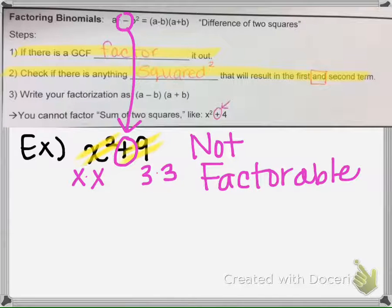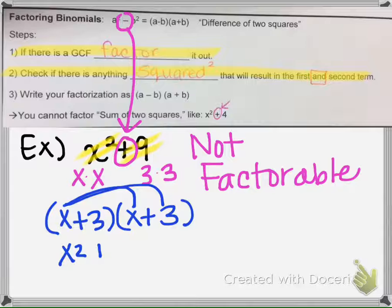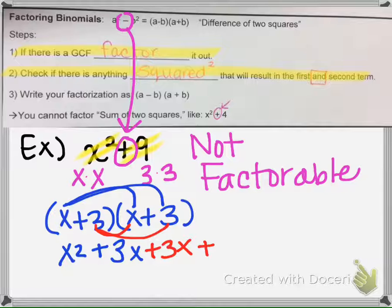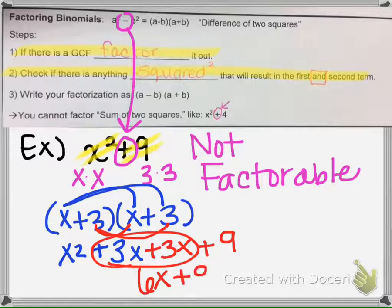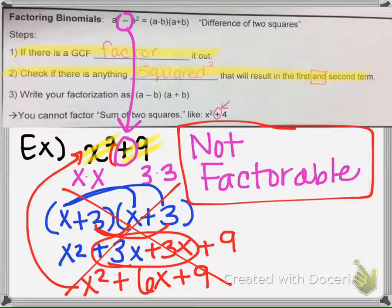A common mistake I see with students is they put x plus 3 times x plus 3, which is wrong. Let's see why. If we multiply this out, we get x squared plus 3x, then 3 times x is 3x, and 3 times 3 is 9. Those two middle terms combine to make 6x. As you can see, it is not what we started with, so this does not work. It is not factorable when there's a plus sign in between.